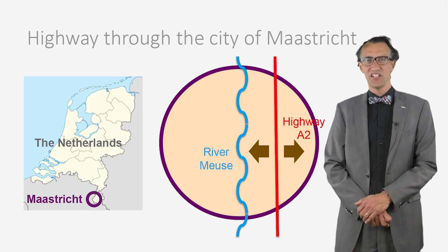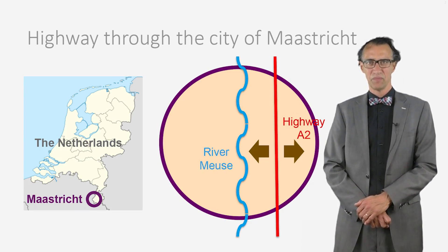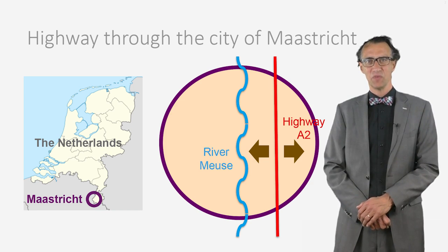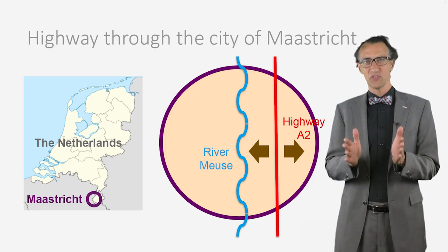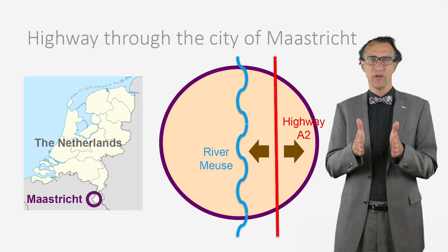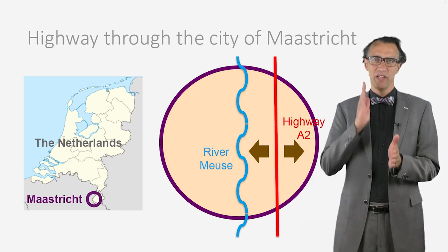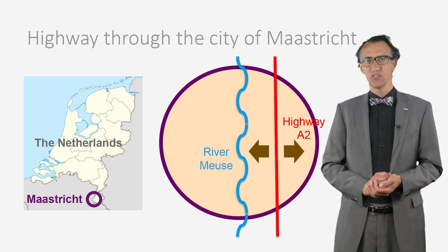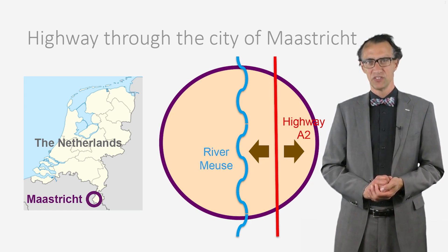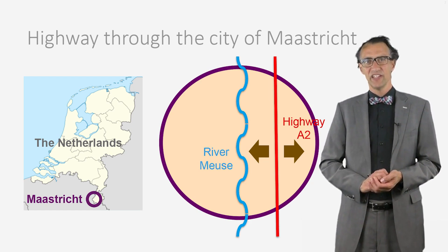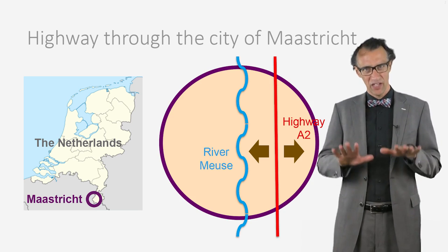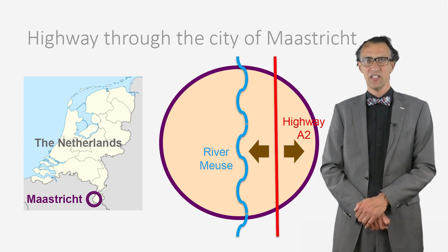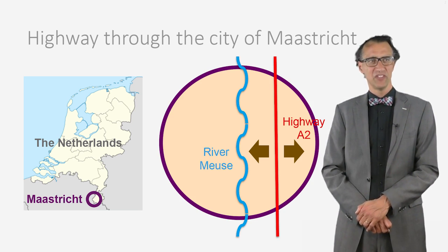Maastricht is a city in the south-east of our country. Through the eastern part of the city runs the busy highway A2. At both sides of the highway, people live closely to this highway. In fact, the highway divides the city into two parts and creates unacceptable levels of air pollution and noise. For decades, there have been plans to bring the highway underground by means of creating a tunnel at the current location. But sufficient support and funding were lacking.